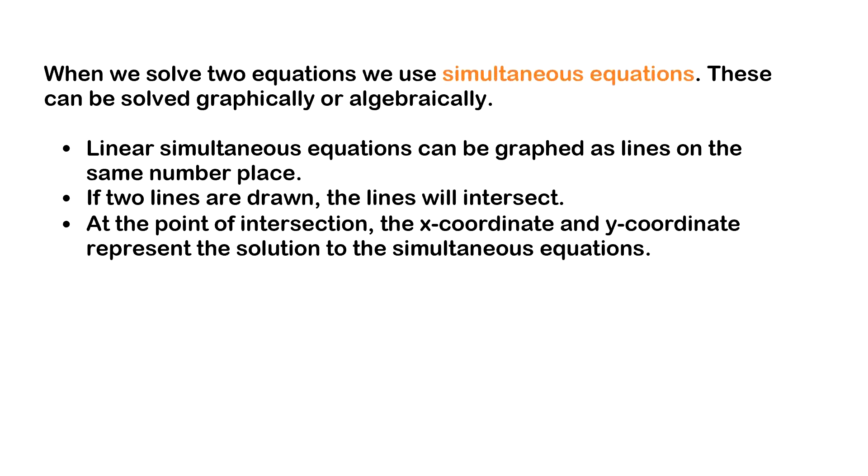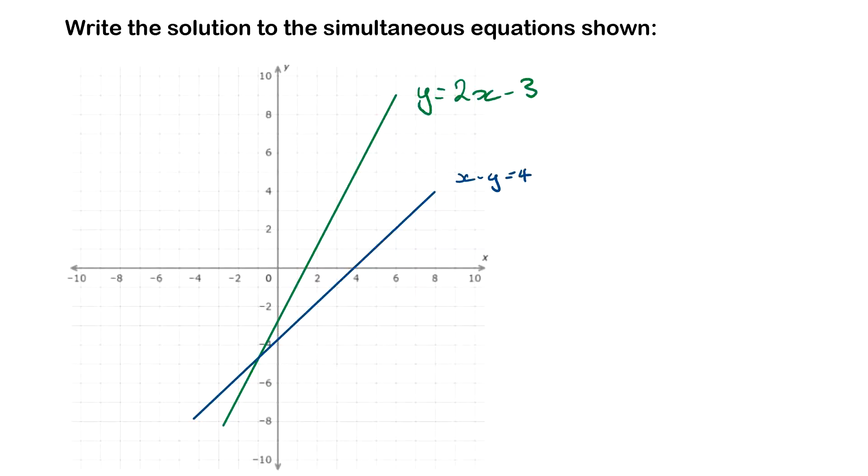On your screen you can see two lines, two linear equations that have been graphed: y equals 2x minus 3 in green and x minus y equals 4 in blue. If you were told to find the solution for both equations, to solve it simultaneously, you look for where they intersect.